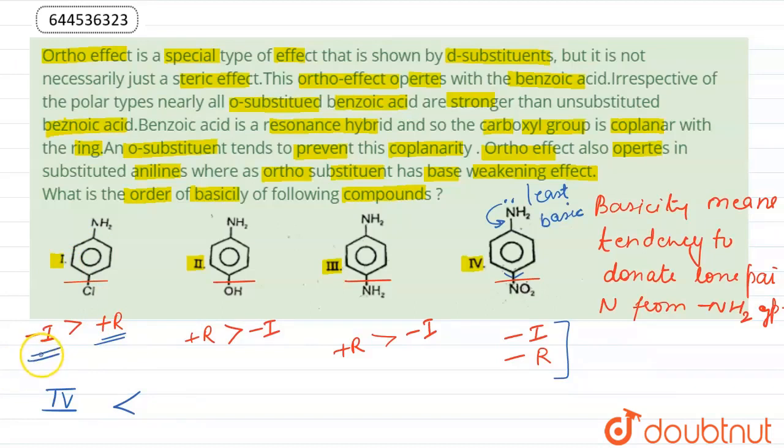And electron withdrawing effect decreases the basicity. So at number two we have compound one. In compounds second and third, same effects are shown by groups, but plus R effect is more in case of NH2 as compared to OH.